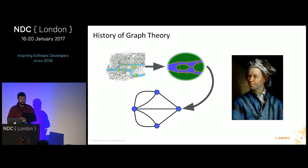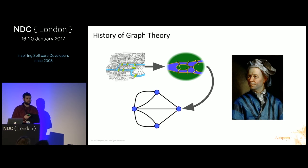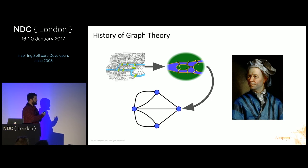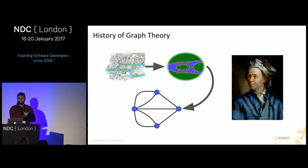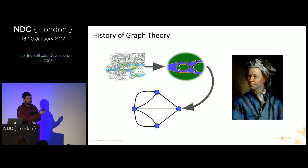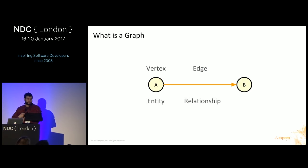This problem laid down the foundations of what became graph theory, on which graph databases are built. There were two islands in the middle of a river — four pieces of land and seven bridges connecting them — and the problem was: is it possible to walk across every bridge once and only once? This became known as an Eulerian walk. Euler abstracted it out into the concept of nodes and edges. You can't actually solve it — an Eulerian walk only works if you have no more than two nodes with an odd number of incident edges.